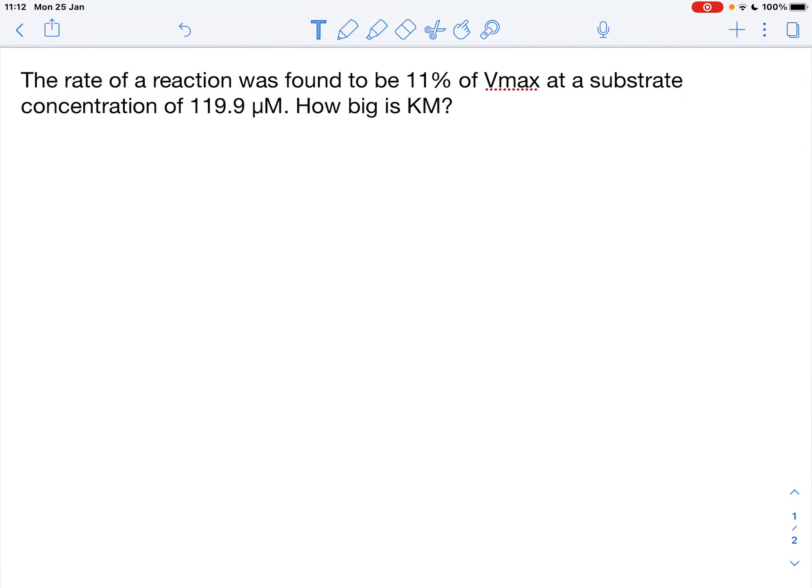In this question we are asked to calculate Km when we have our rate and a certain substrate concentration. So first let's write down the Michaelis-Menten equation. Our rate equals Vmax times the substrate concentration divided by Km plus the substrate concentration.